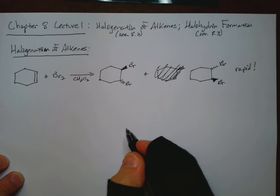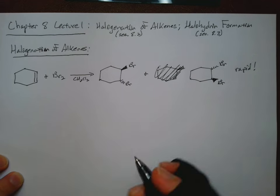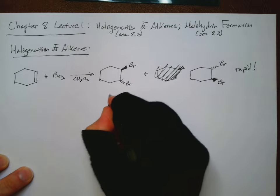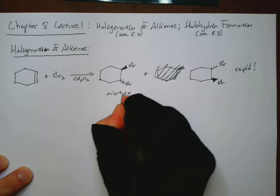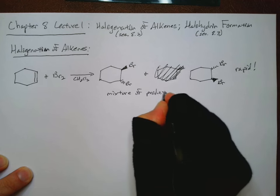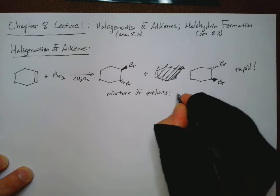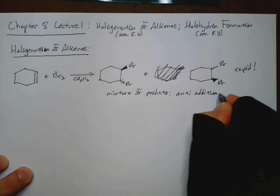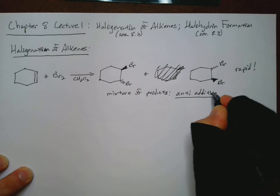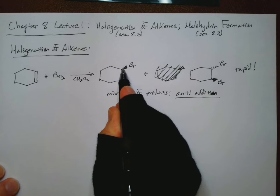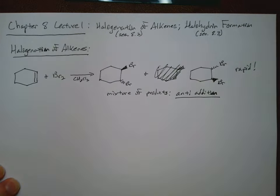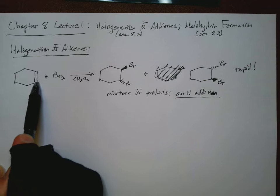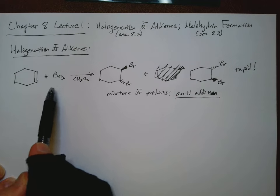So what I want to do is spend some time thinking about what kind of mechanism could account for the formation of these products. I'm just writing here mixture of products, anti-addition. And we say that we have an anti-addition because the bromines are adding to different sides of the double bond, or different faces of the double bond. Our double bond is here in the plane of the paper. One bromine is coming in from this side, and the other bromine is coming in from the other side. But the question is how to get that to happen with Br2.